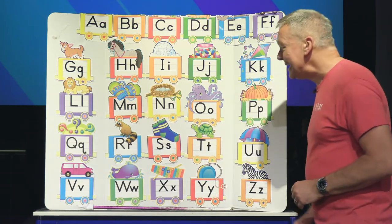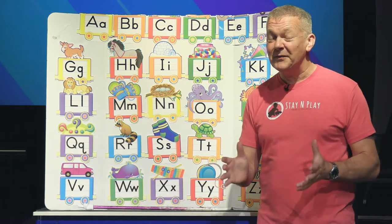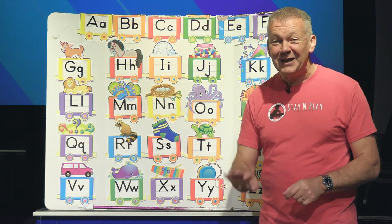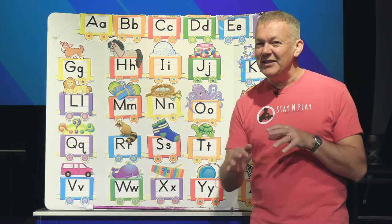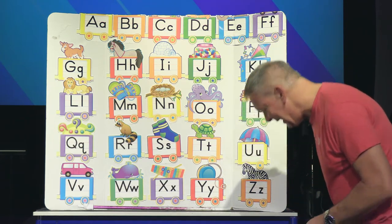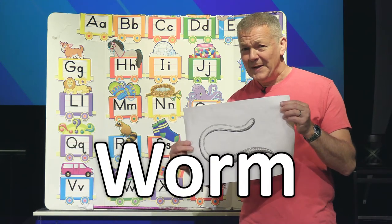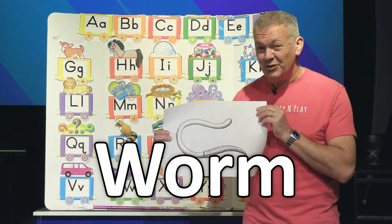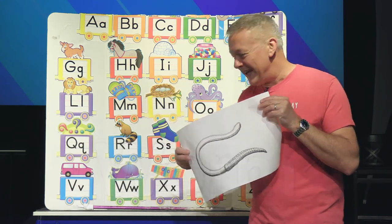Our next animal begins with W and it's also an animal that loves to come out after it's rained. Again it crawls along the ground and it's very wriggly and it likes to live in the dirt. Any idea what it is? It is a wiggly worm, beginning with W. The reason that the worms come out is because they love the rain and they love to be able to dig in and out of the mud.